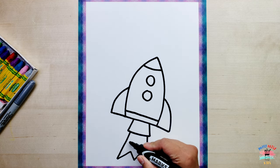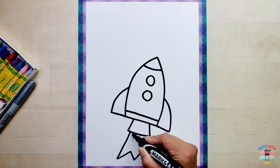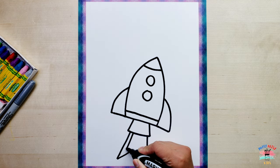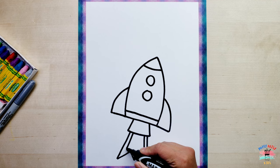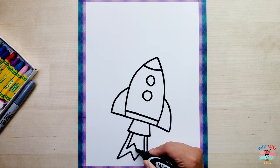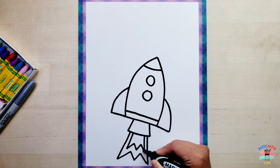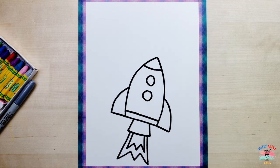I'm going to draw the same one, a smaller one here. So line, line up, down, up, down, up, and close it down. Alright, you have your rocket ship.